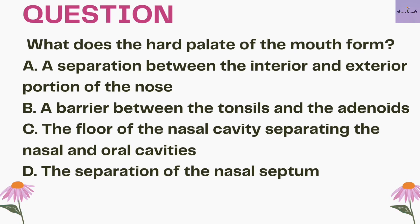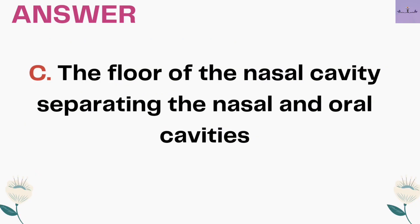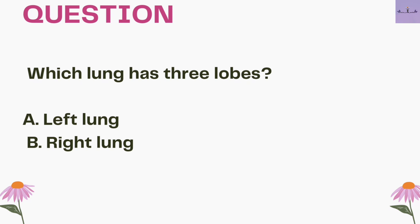Next question: what does the hard palate of the mouth form? A. A separation between the anterior and exterior portion of the nose. B. A barrier between the tonsils and the adenoids. C. The floor of the nasal cavity separating the nasal and oral cavities. D. The separation of the nasal septum. It acts as the floor that separates the oral cavity and nasal cavity, so the answer is option C.